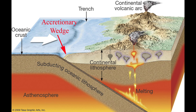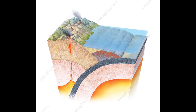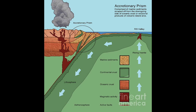Some accretionary wedges contain small blocks or layers of high-pressure, low-temperature metamorphic rocks known as blueschists that have formed deep within the wedge where pressures are high and temperatures are low because of the insulating effect of the cold subducting plate. These high-pressure rocks were brought to the surface by structural processes.